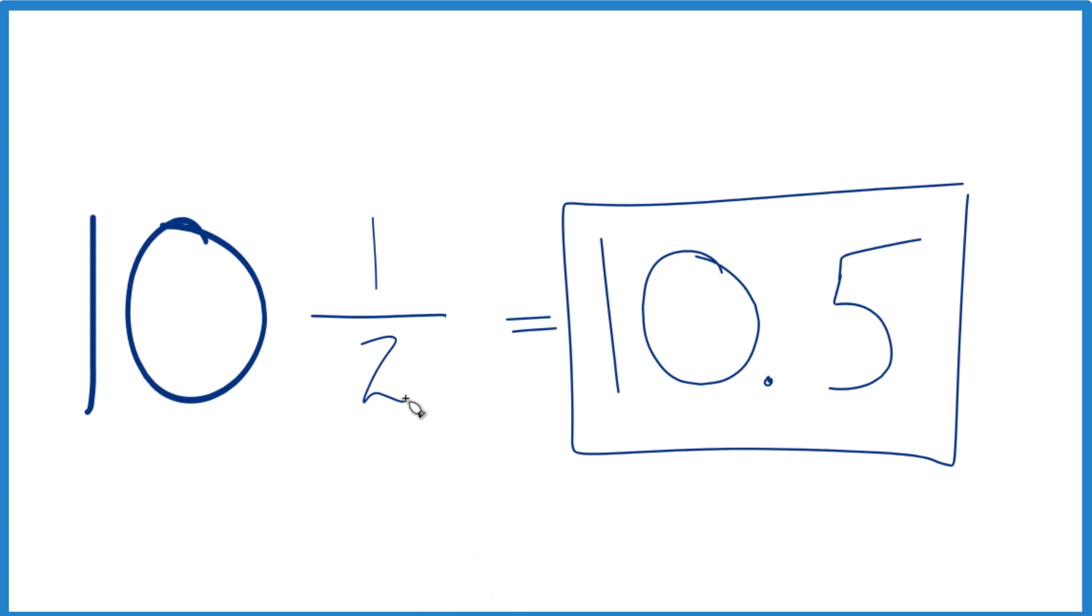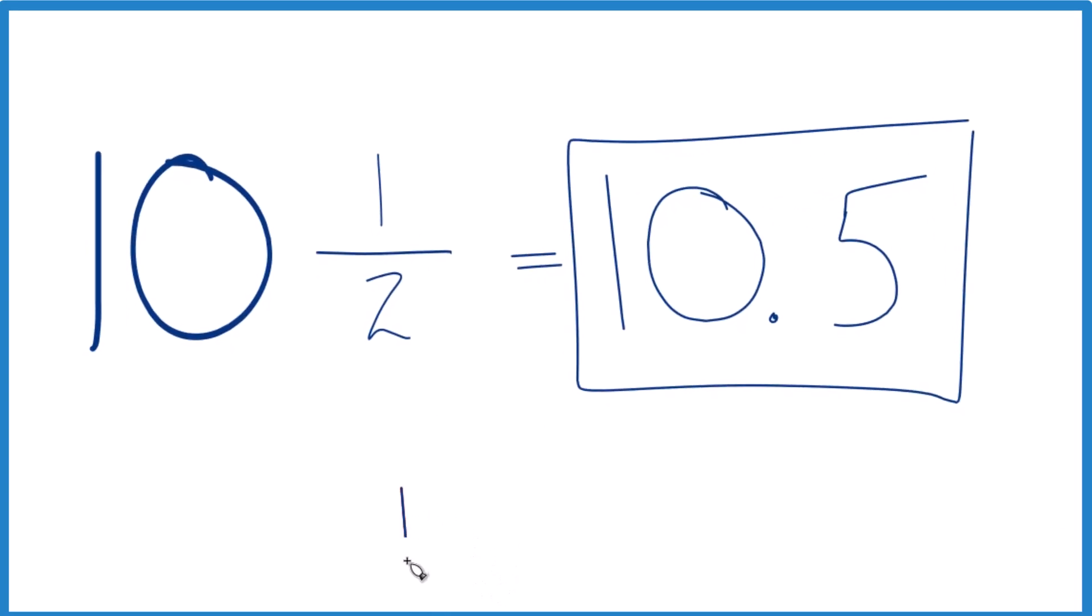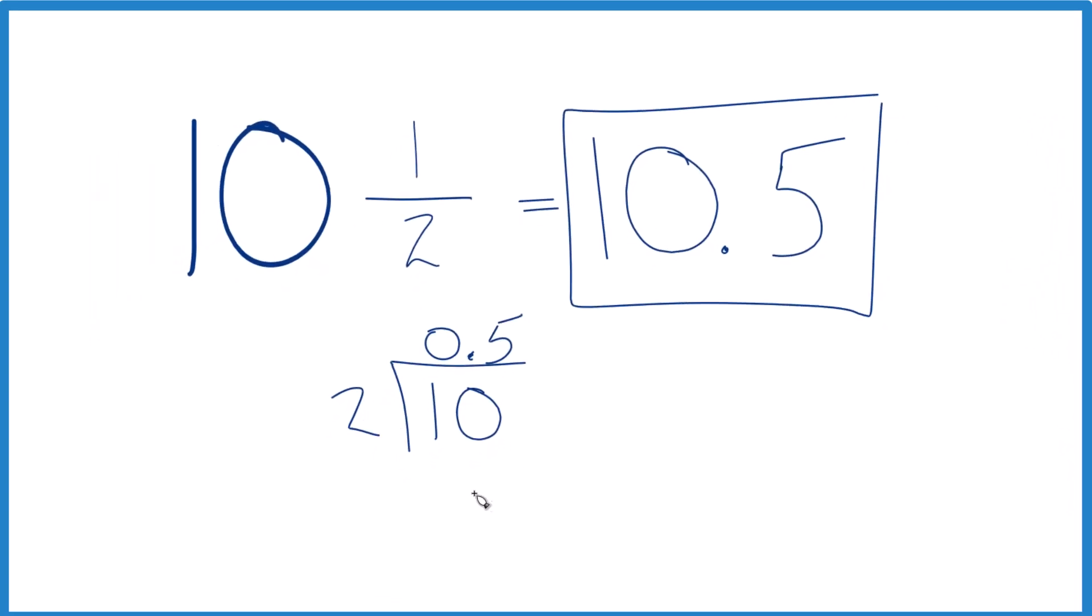You could say 1 divided by 2. So we have 1. We want to know how many times 2 goes into 1. 2 doesn't go into 1, but if we call this 10, put a 0 point up here, then 5 times 2, that equals 10.